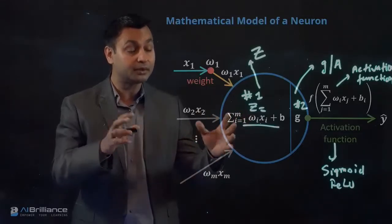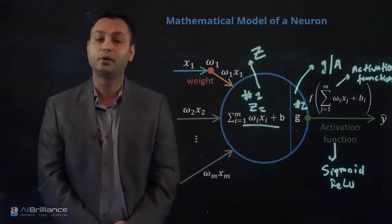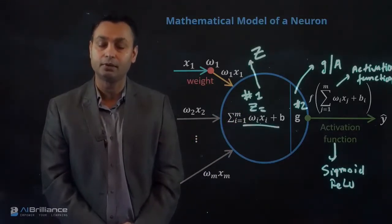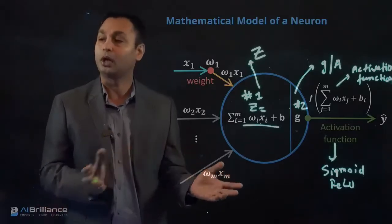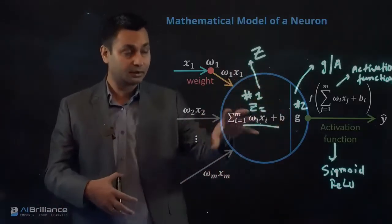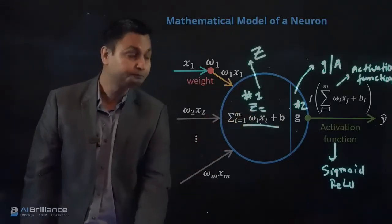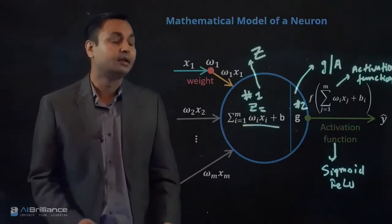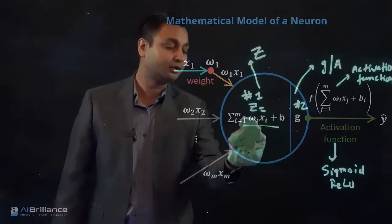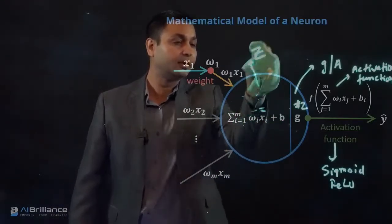And once we concatenate and basically aggregate this information of multiple computations across multiple neurons in a network, we essentially have a framework that allows us to fit a very complex function for input to output mapping. But at a single neuron level, what we have is essentially these two computations that we can do.